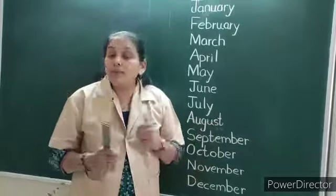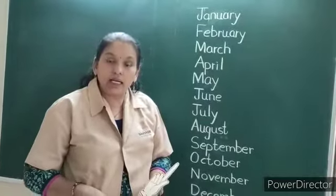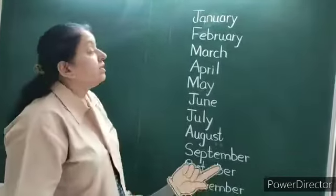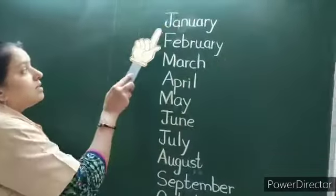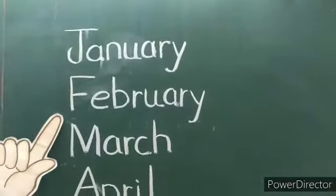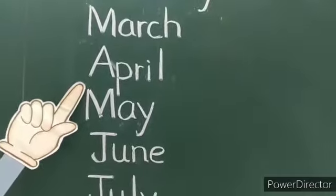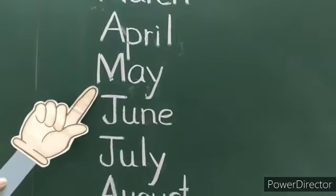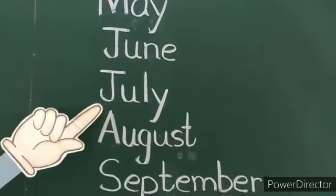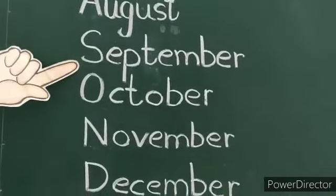So children how many months are there in a year? Come on repeat. There are 12 months in a year.